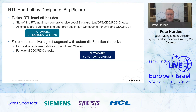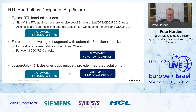For more comprehensive sign-off, we recommend augmenting those structural checks with automatic functional checks — high value code reachability and various functional checks on the lint side, and a range of functional checks on the CDC/RDC side. Jasper Gold RTL designer apps, Superlint and CDC, are uniquely positioned to provide an integrated solution for both the structural checks and the automatic formal checks.